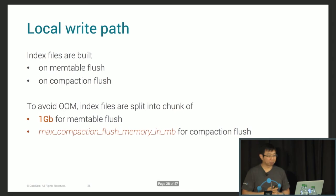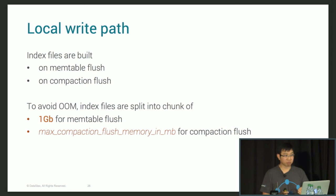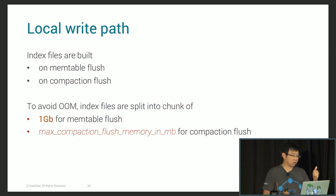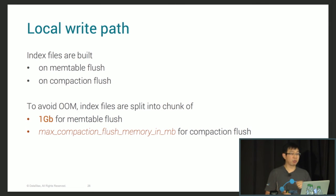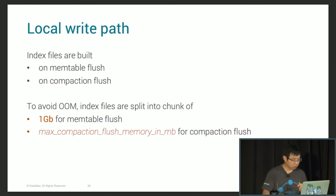Local read and write path. Index files are built when you have a mem table flush to disk. As soon as Cassandra flushes the mem table, it will also build SASI index files. They are also built on compaction flush. To avoid out-of-memory issues, index files are split into chunks of one gigabyte for mem table flush, and there is also a tunable parameter for compaction flush.